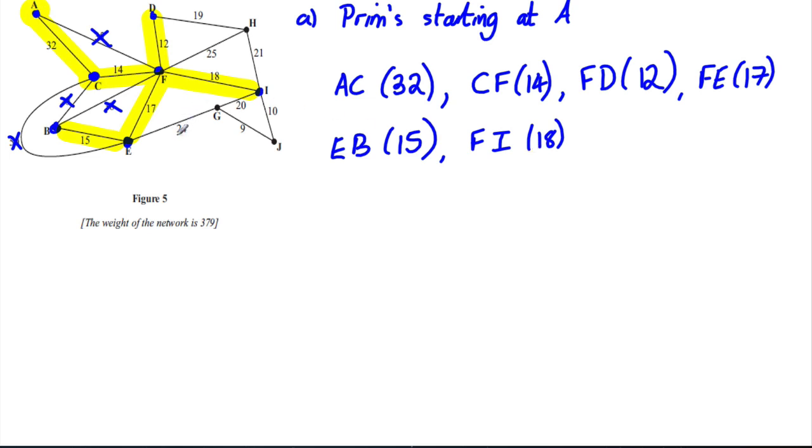Now we know we can't ever take that 38 because it would form a cycle, or the 20 as it would form a cycle, or the 50 as it would form a cycle. So now we're looking at everything coming out of the rest. So we'd have the 19, the 25, the 18, or the 24. We're going to take the 18. That's FI. And clearly we can never take... Okay, and now we're going to look at everything coming out of here. So the 19, the 25, the 21, the 10, the 20, or the 24. We're clearly going to take the 10. So IJ, 10.